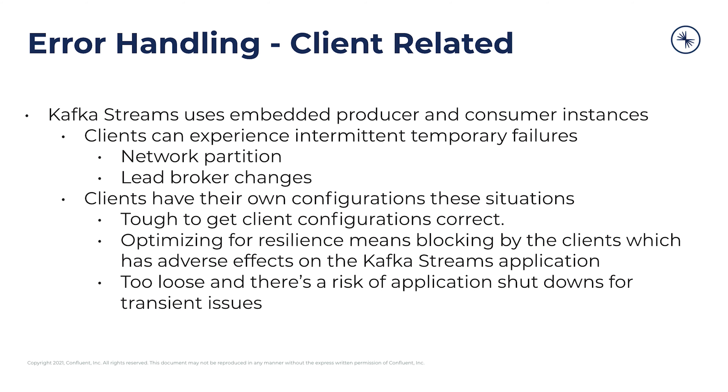Kafka Streams has an embedded producer and consumer instance that it uses to get records from and send records to Kafka. Each of these clients can experience some intermittent temporary failures — things like the network partition mentioned earlier, or a change in the broker or the leader for a partition or the group coordinator. These are exceptions that would be handled internally to Kafka Streams. Clients have their own configurations for these situations, which you can configure as the user if the default configurations are not working for you. In general, the defaults are chosen because they work well across a wide variety of situations.